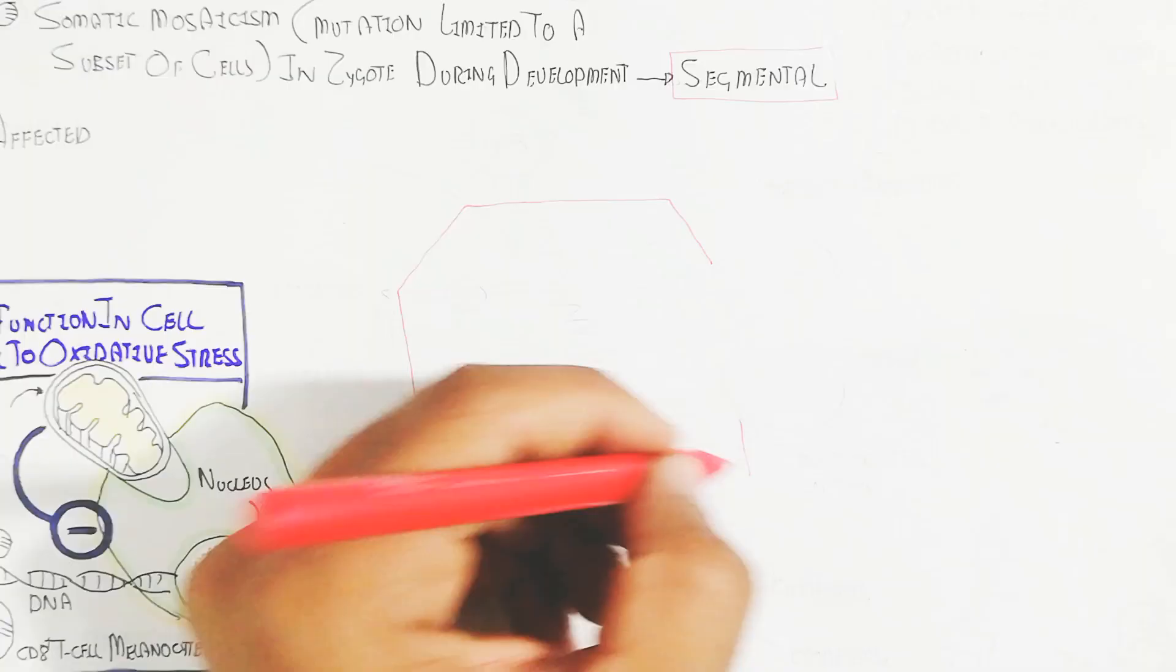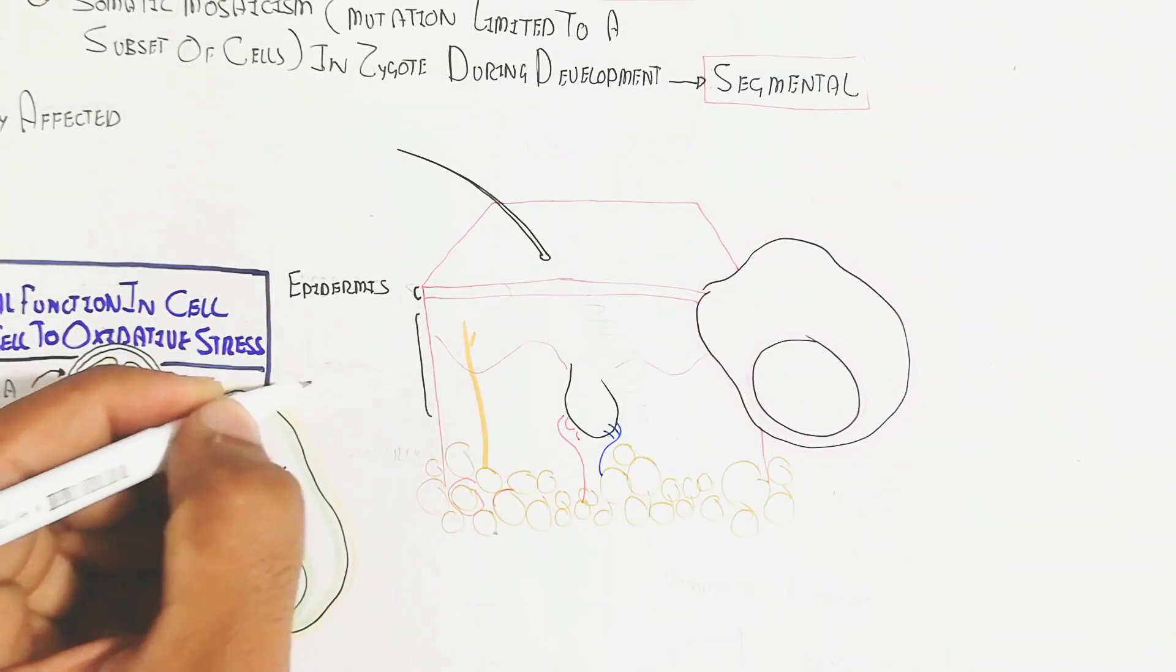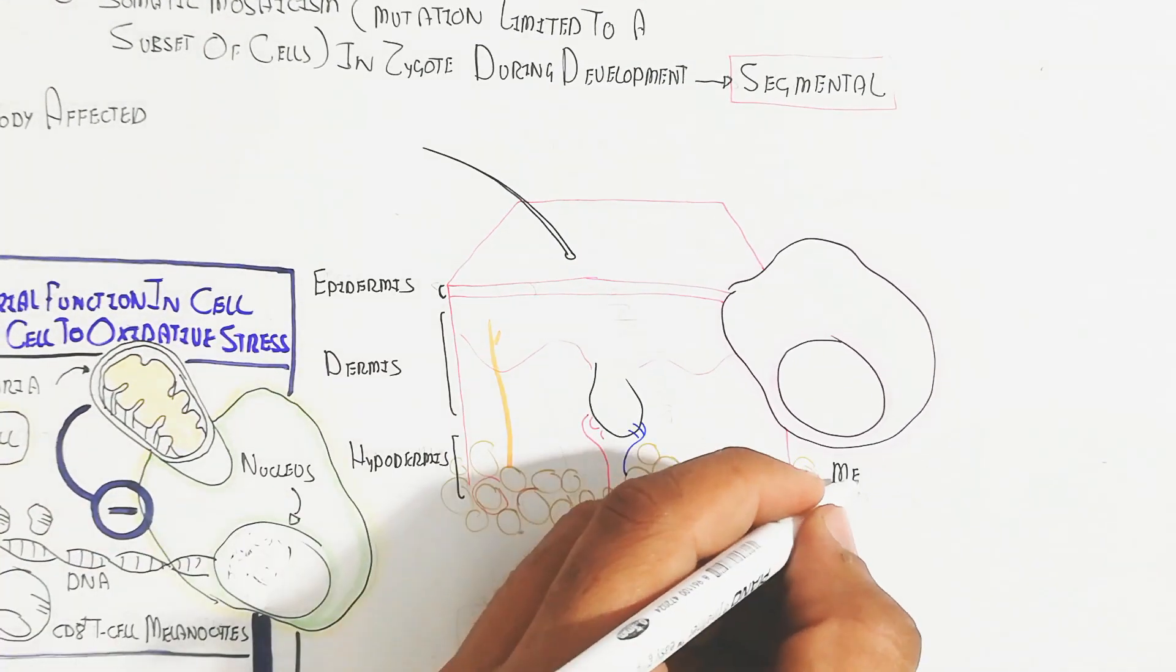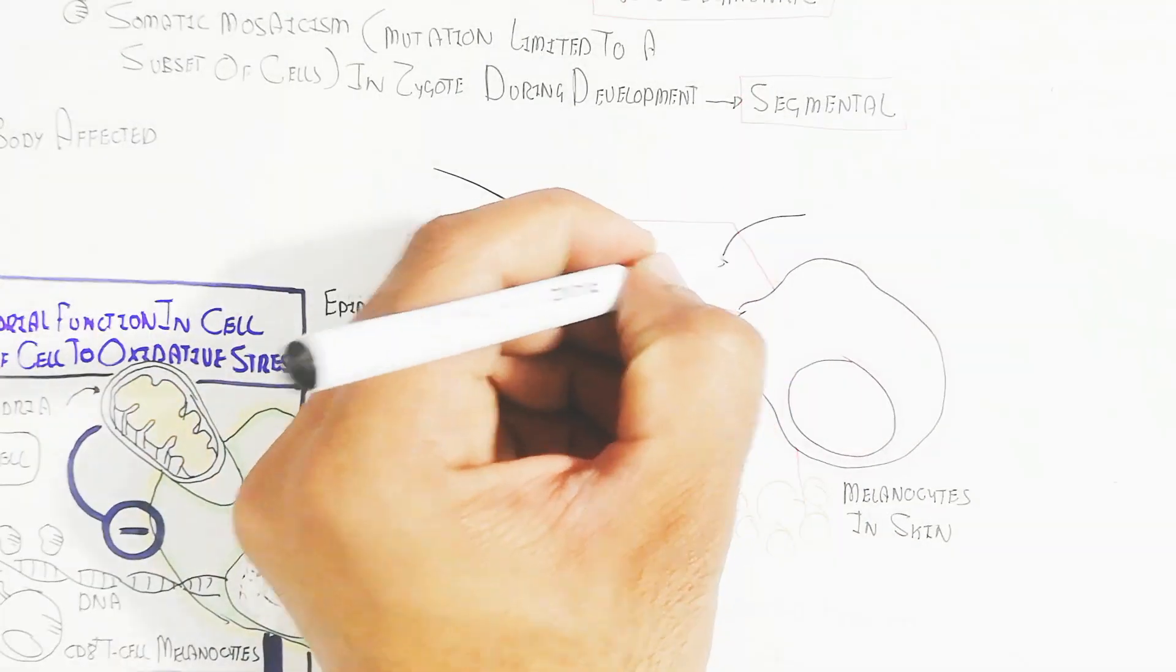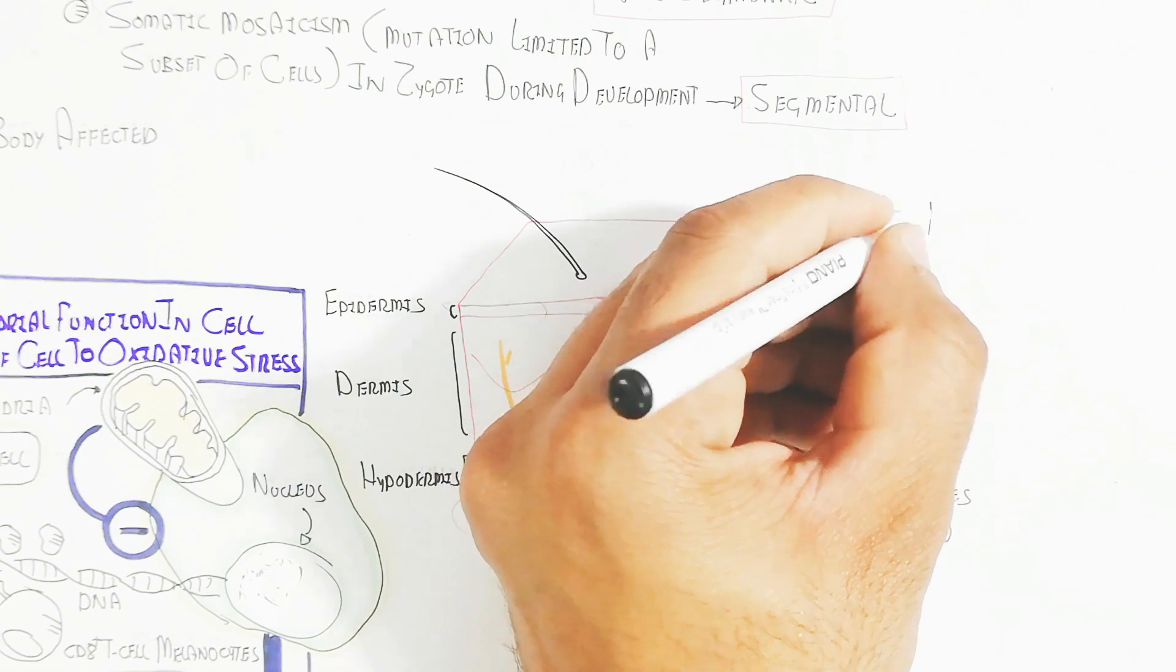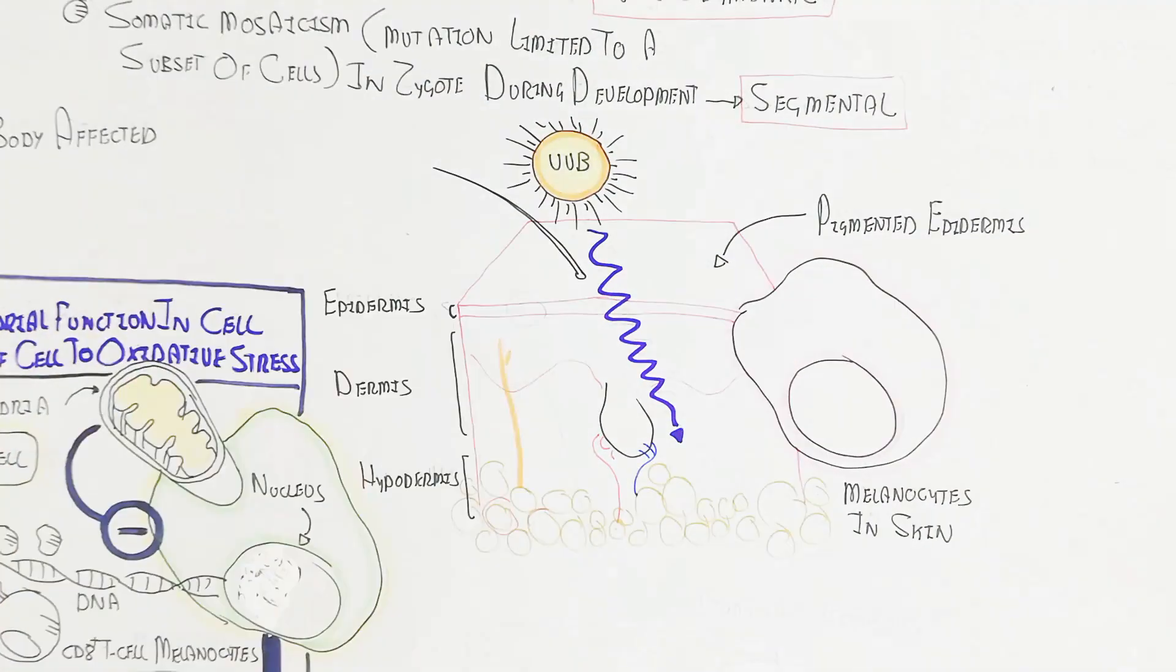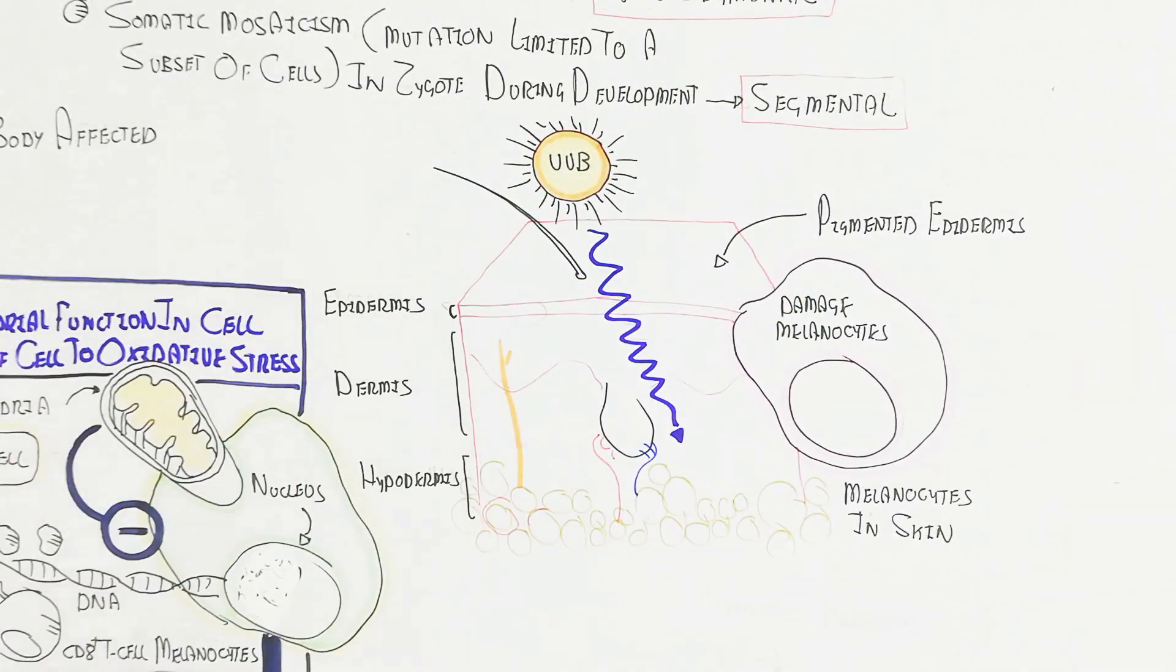Let's understand the further process. The skin contains epidermis, dermis, and hypodermis. Hypodermis contains adipose tissue, while the epidermis contains melanocytes. This is pigmented epidermis which protects from UVB radiation. Whenever leucoderma occurs, it causes problems and UVB invasion can cause cancer.